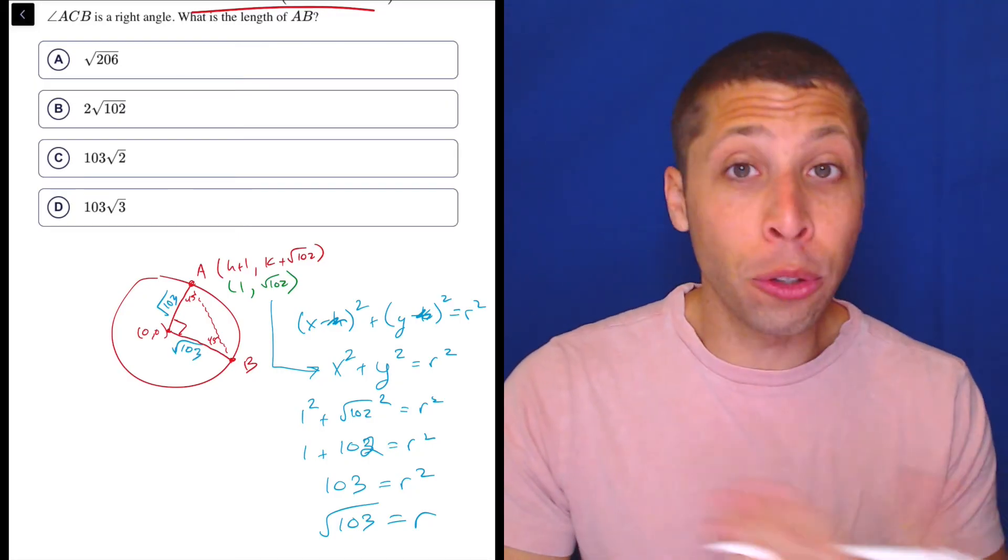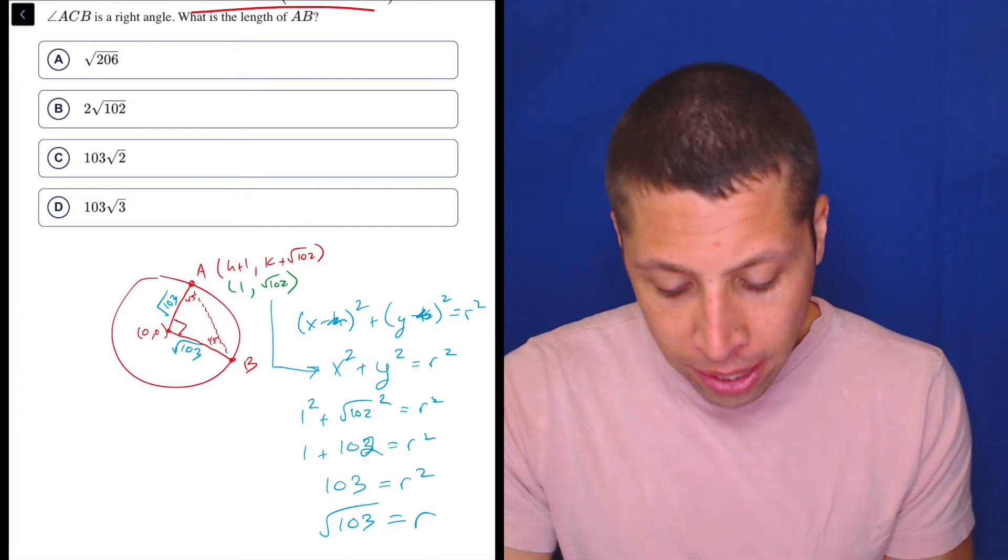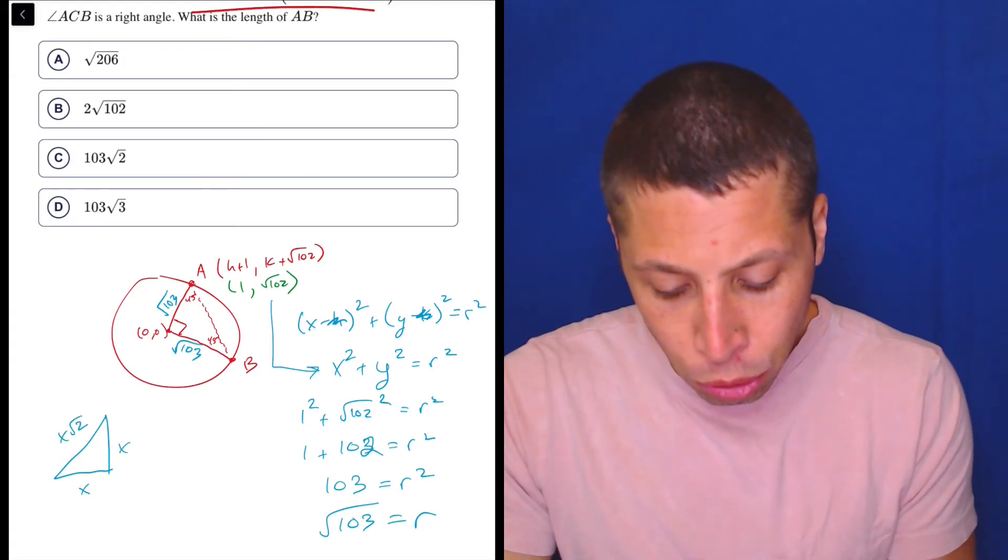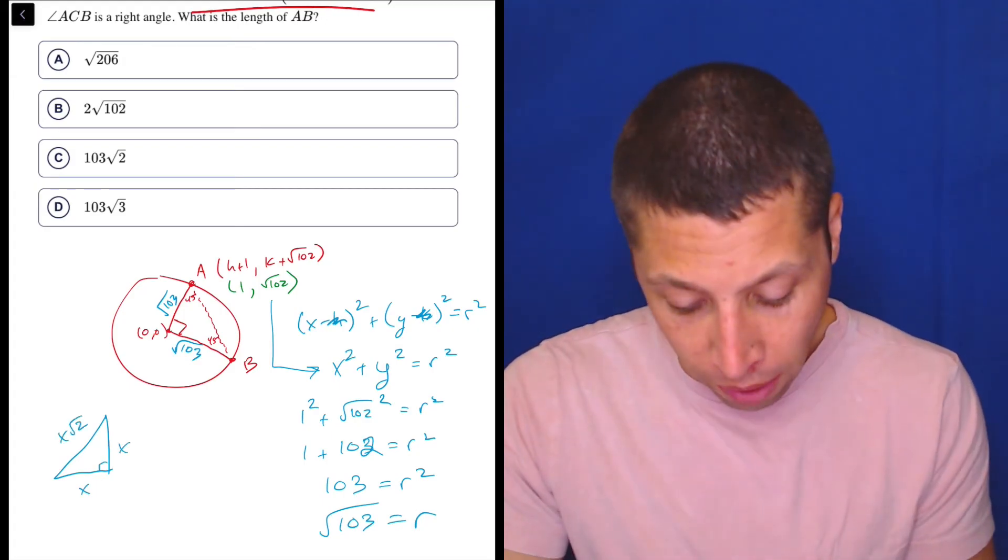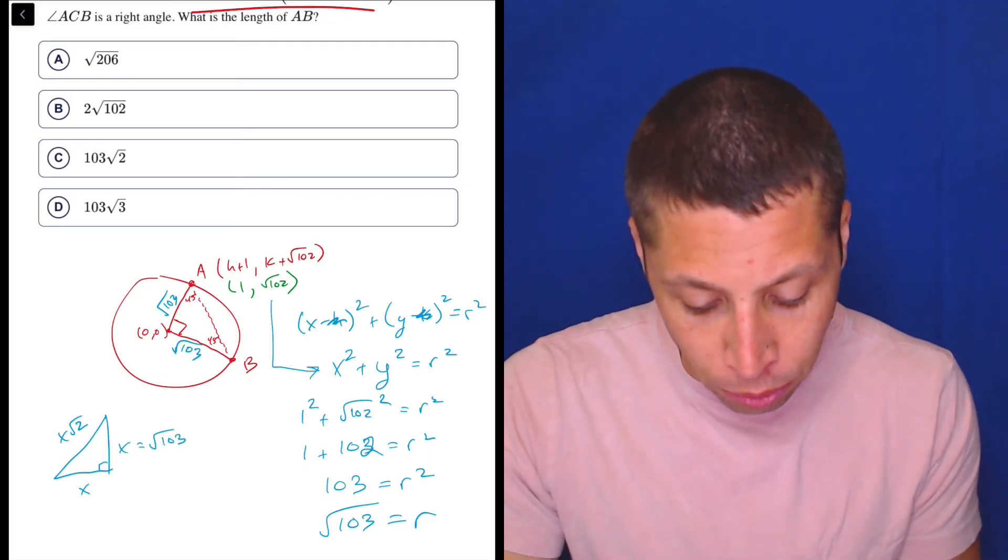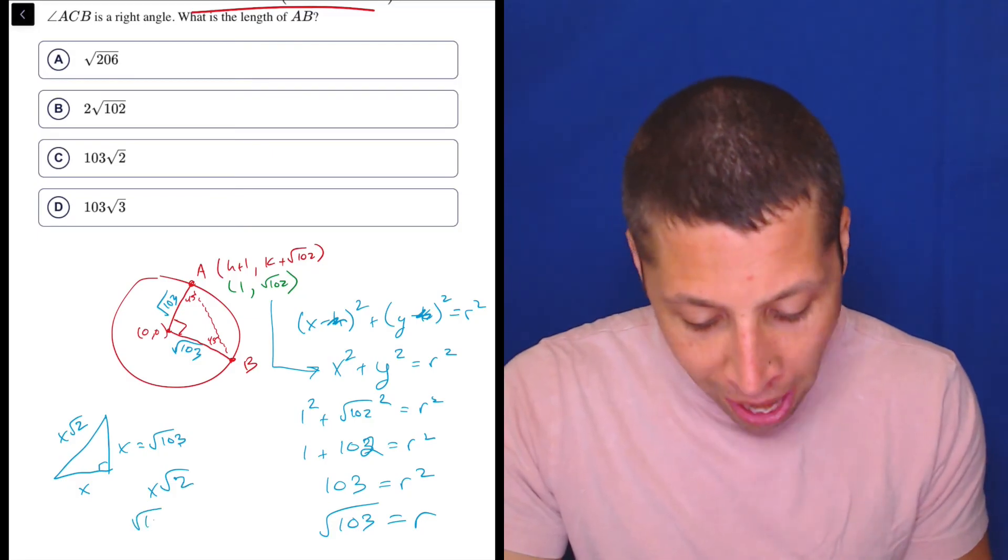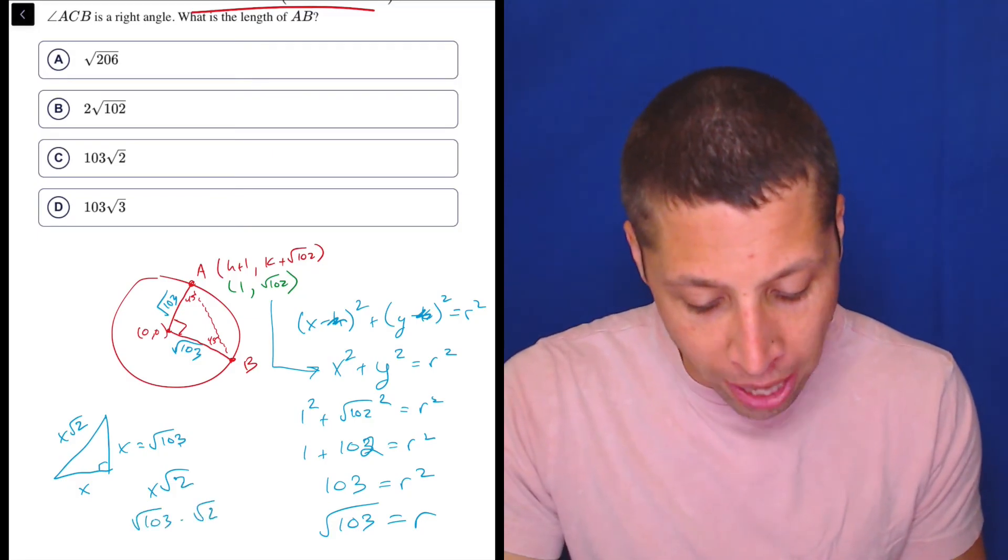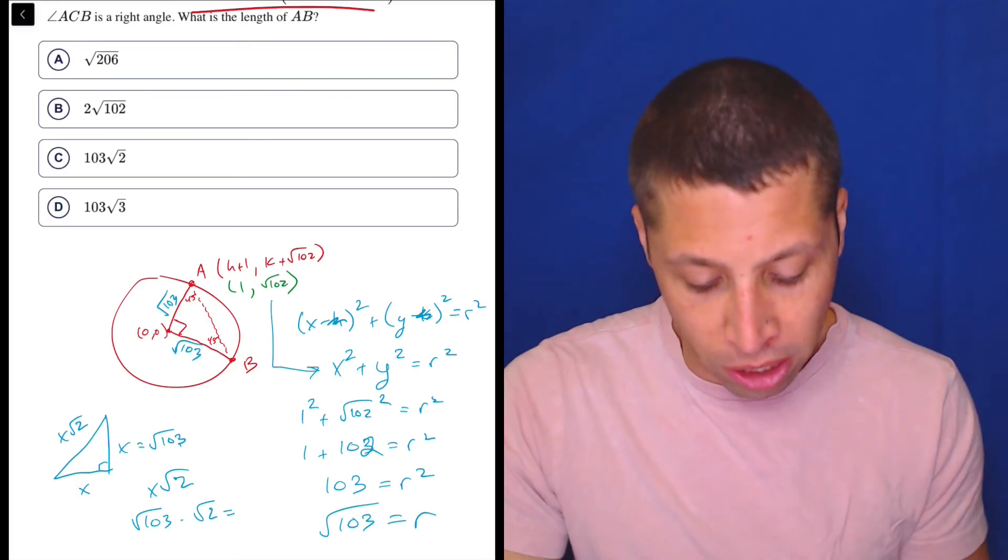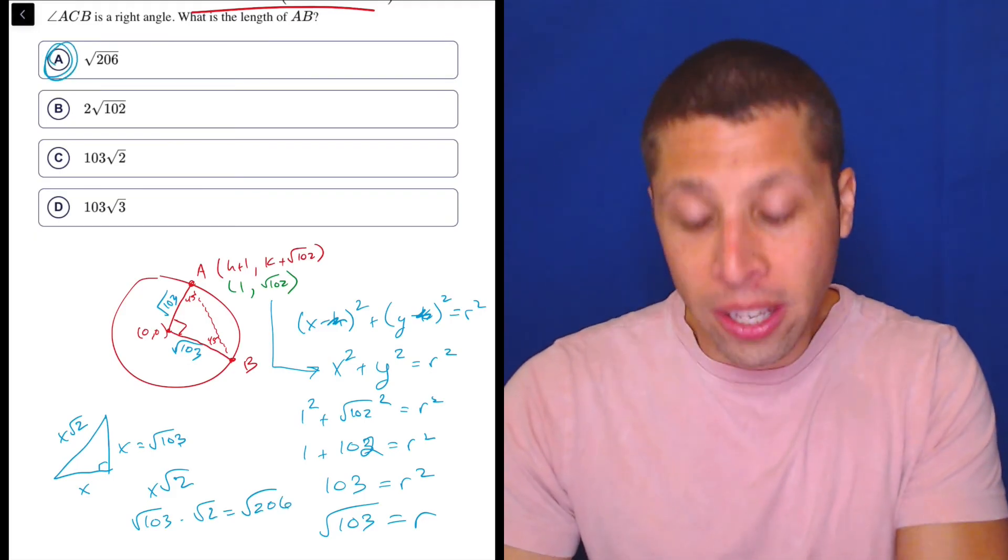Now, if you wanted to, you could do Pythagorean theorem, or you can go to the reference chart, and remember that the way that this works is you have the X, X, and X root 2 sides for a 45-45-90 right triangle. So if the X is radical 103, then X root 2 is going to be radical 103 times radical 2, which if we needed to, we'd get a calculator for it, but it doesn't really matter. This is just going to be multiplied in a normal way. So we get radical 206, which is choice A.